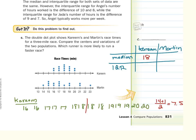When looking for the interquartile range for Karim, we have 7 numbers in each half. Taking (7 + 1) ÷ 2 = 4, which tells us it's the 4th term. The 4th terms are 19 and 17. So 19 minus 17 gives us an interquartile range of 2.